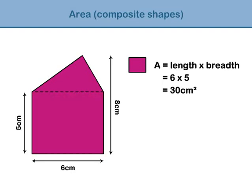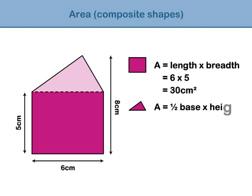Next, find the area of the triangle. The formula for calculating the area of a triangle is: area equals half times base times height. Since we don't know the height of the triangle, we will have to work it out. The height is 8 minus 5, which equals 3 centimetres. Substitute the values of the base and height into the formula. Half times 6 times 3 gives an answer of 9 centimetres squared.